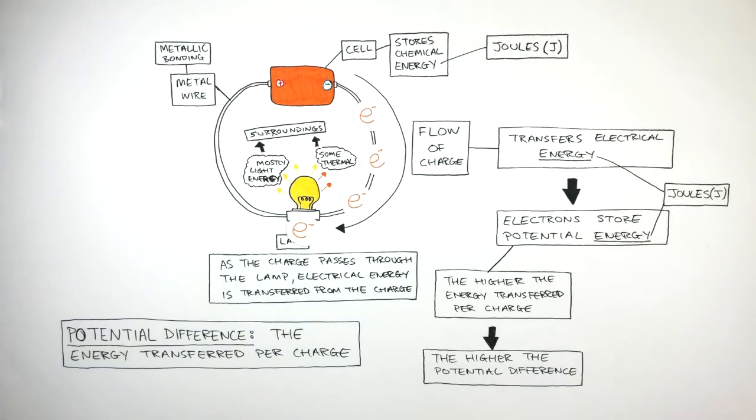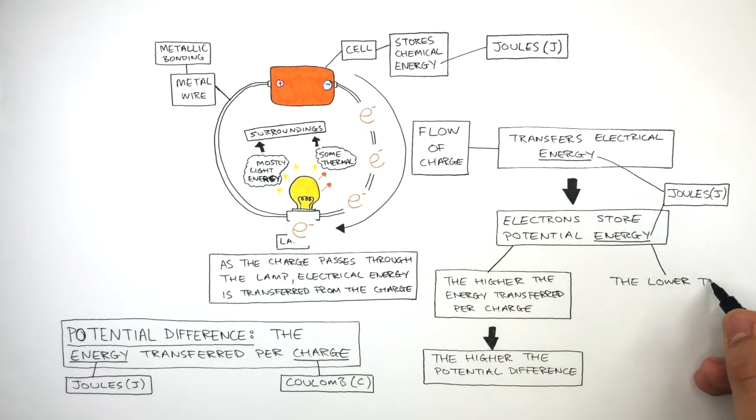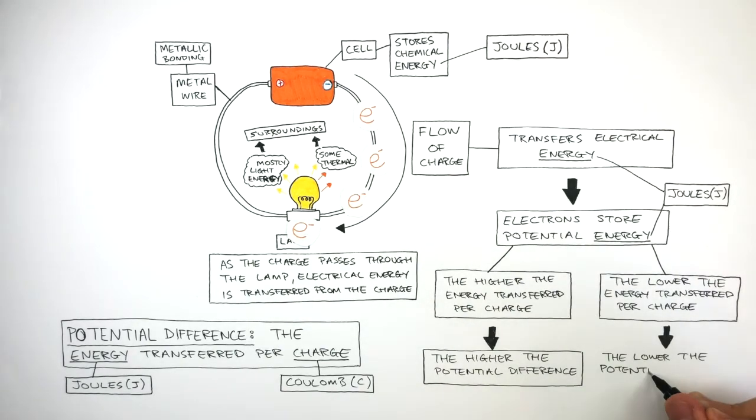We already know the unit of energy is joules and the unit of charge is coulomb. Therefore, the lower the energy transferred per charge, the lower the potential difference.